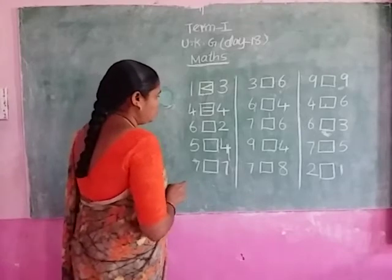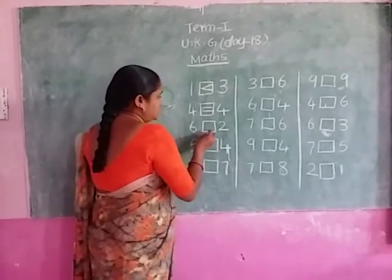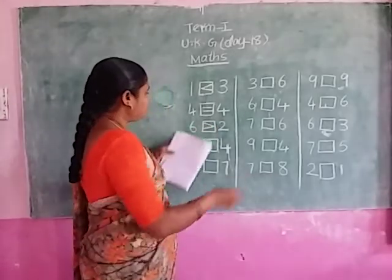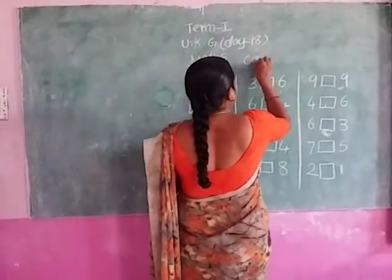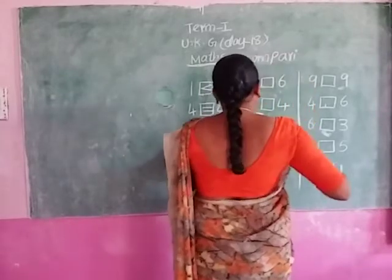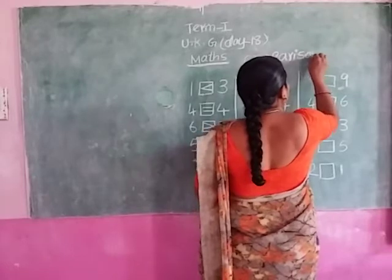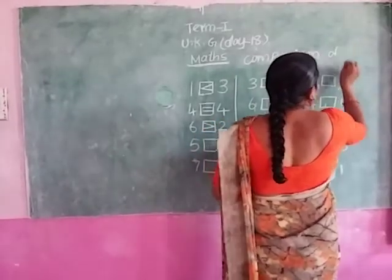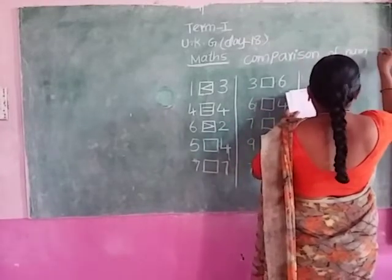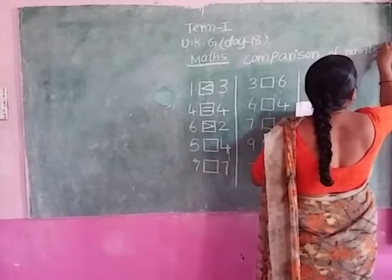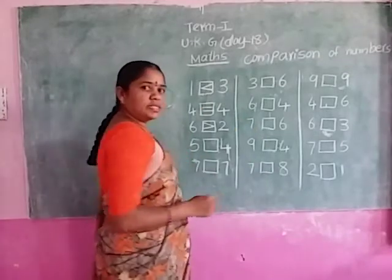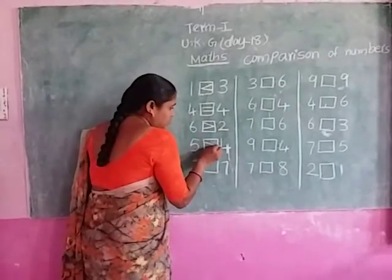Next, six and two. Six is a greater number, so this is the lower. Next, five and four. Five is a greater number, so this is the lower number. Here, seven and seven — which is a greater number? Both are equal.